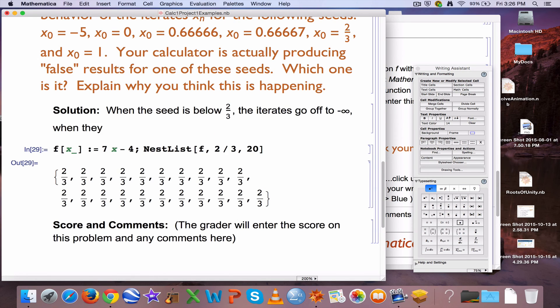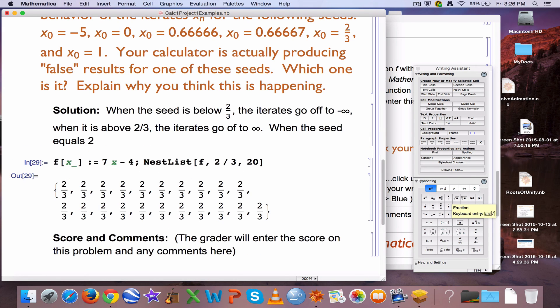When it is above 2 thirds, the iterates go off to infinity. When the seed equals 2 thirds, it stays fixed. You can type 2 thirds as a fixed point, but again, maybe your calculator is giving you false results for that.